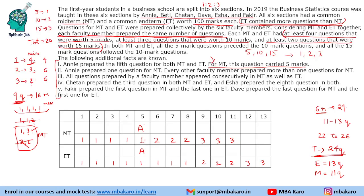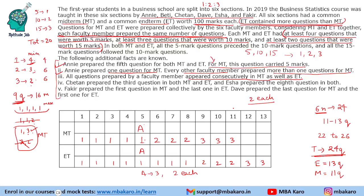Any prepared 1 question for MT, while every other faculty member prepared more than 1 question. With 11 total MT questions and 6 faculty members, Any prepares 1 and the others prepare 2 each. For ET with 13 questions, Any prepares 3 and the others prepare 2 each. Also, all questions prepared by a faculty member appeared consecutively in both MT and ET.